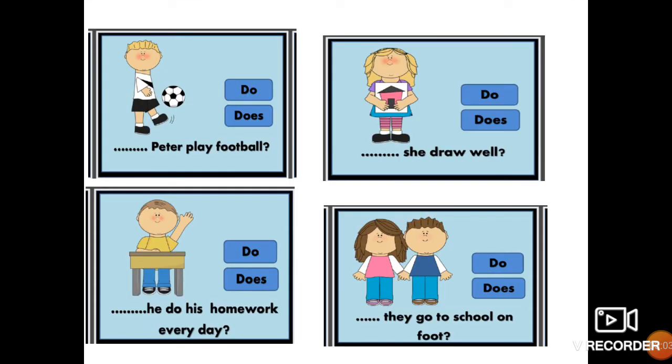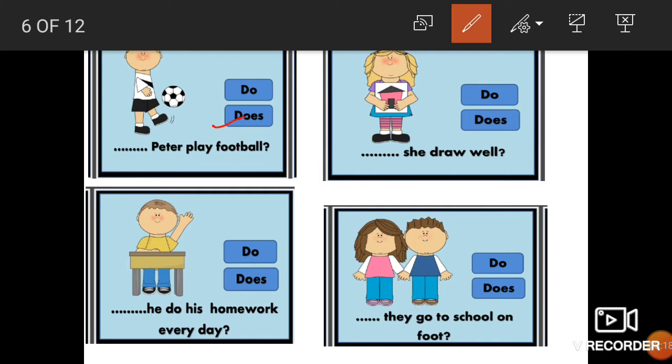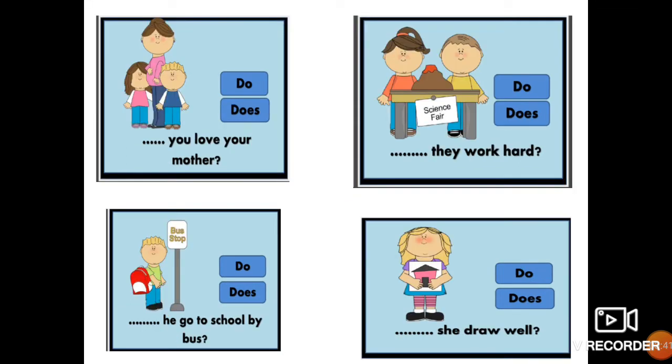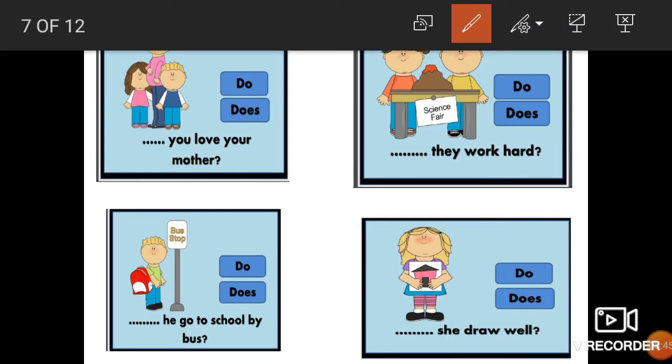Let us begin. Now dash peter play football. When you are talking about one person, then you have to use does. So does Peter play football. Here also, she singular. Does she draw well. Next, again one, he means singular. So does he do his homework everyday. Now here, more than one. So do they go to school on foot. Do you love your mother. Do they work hard. Does he go to school by bus. Does she draw well.